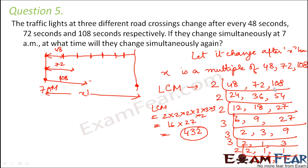All the original values are in seconds, so the LCM is 432 seconds. That means the value of x is 432 seconds — after 432 seconds from 7 AM, all three lights will simultaneously change again.